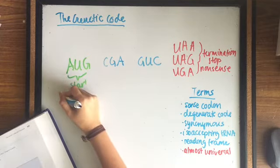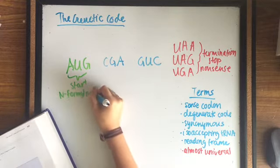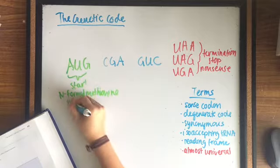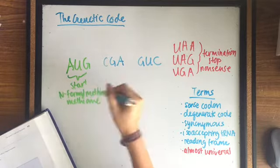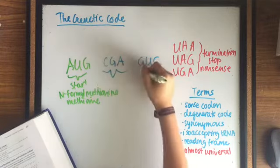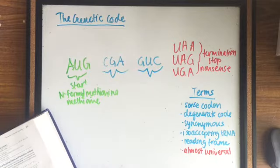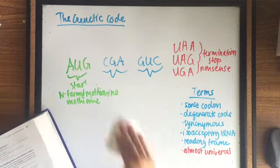In bacterial cells, the first AUG encodes N-formyl methionine, whereas in eukaryotes it encodes methionine. Note that the code is generally non-overlapping.